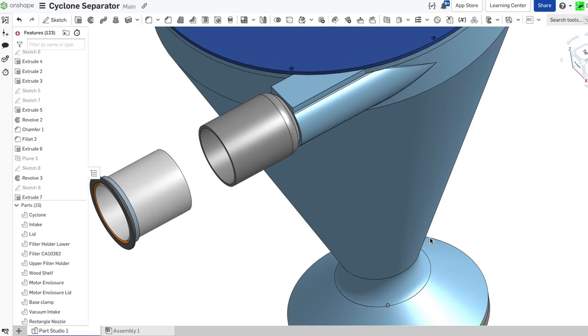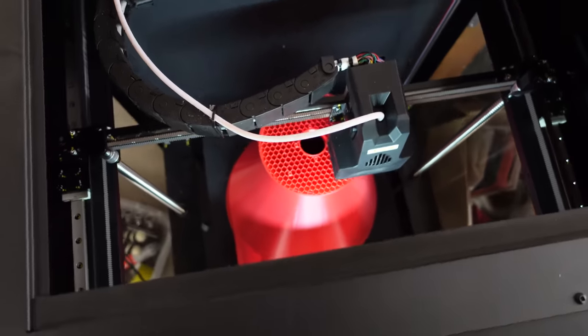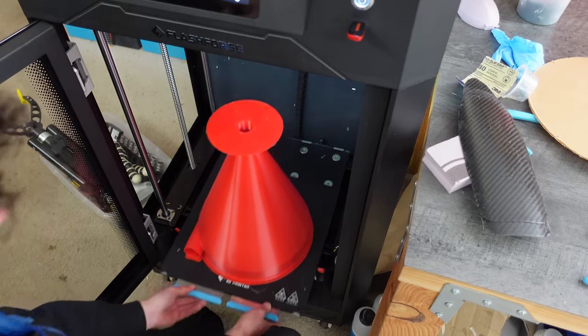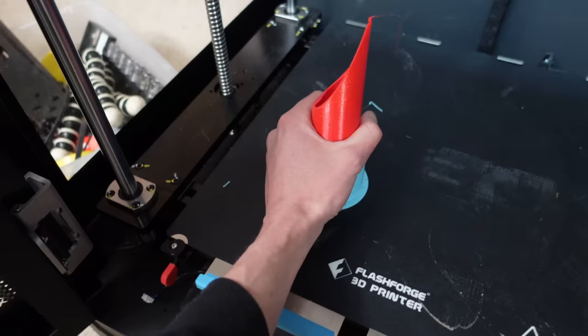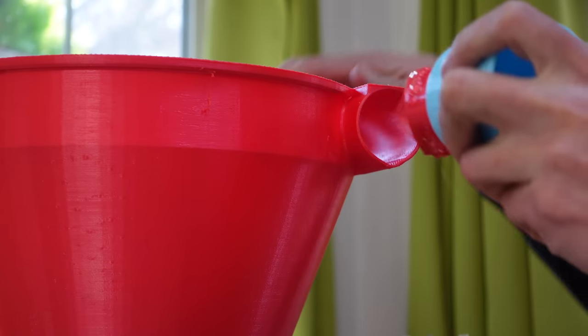So let's start the build. I printed the main cone part on my FlashForge Guider 3+. This printer has a very large print volume, so it allowed me to make the cone much bigger than the last one. It's 15 inches tall.